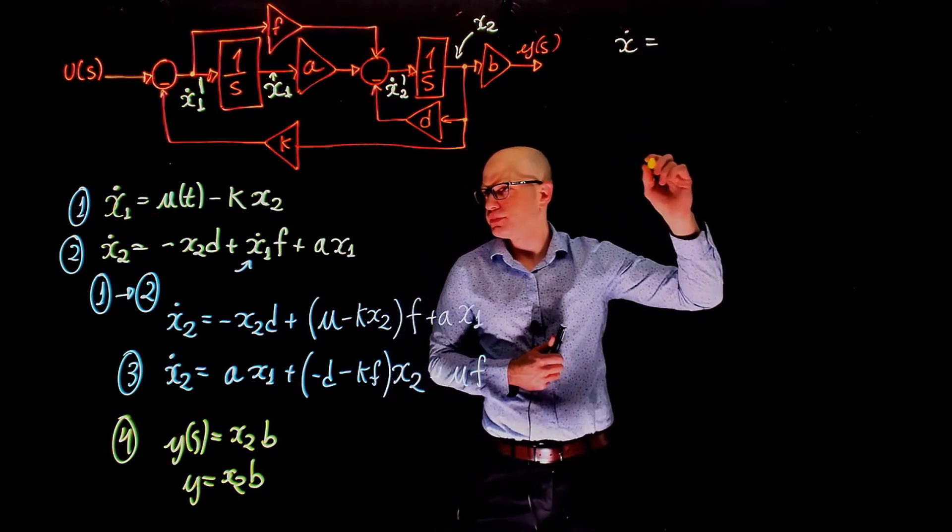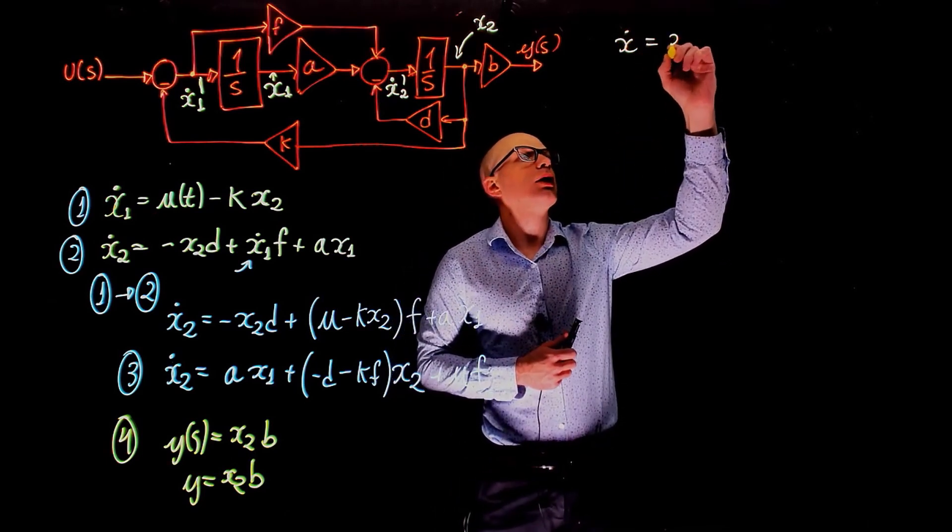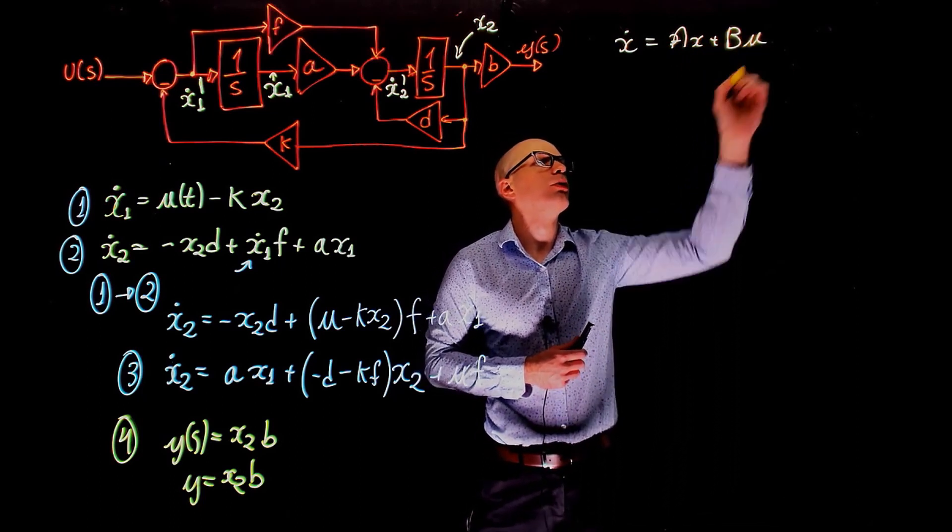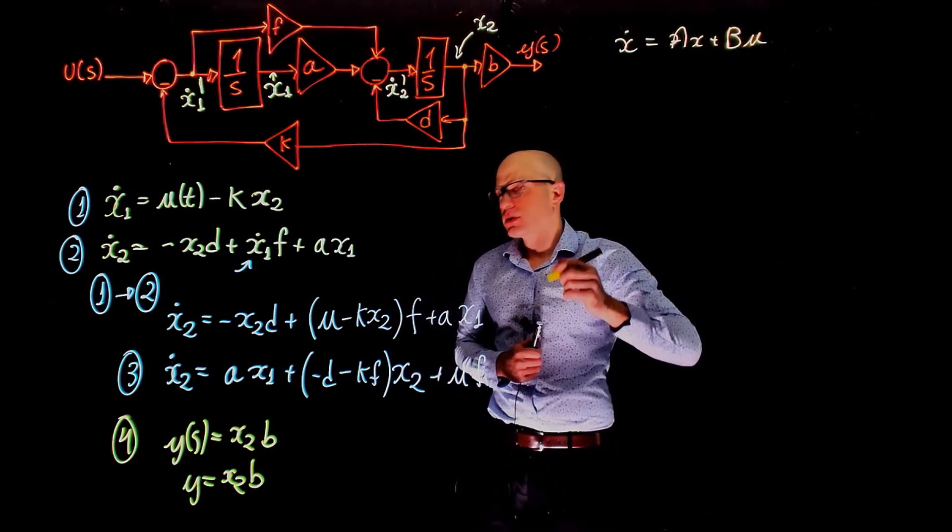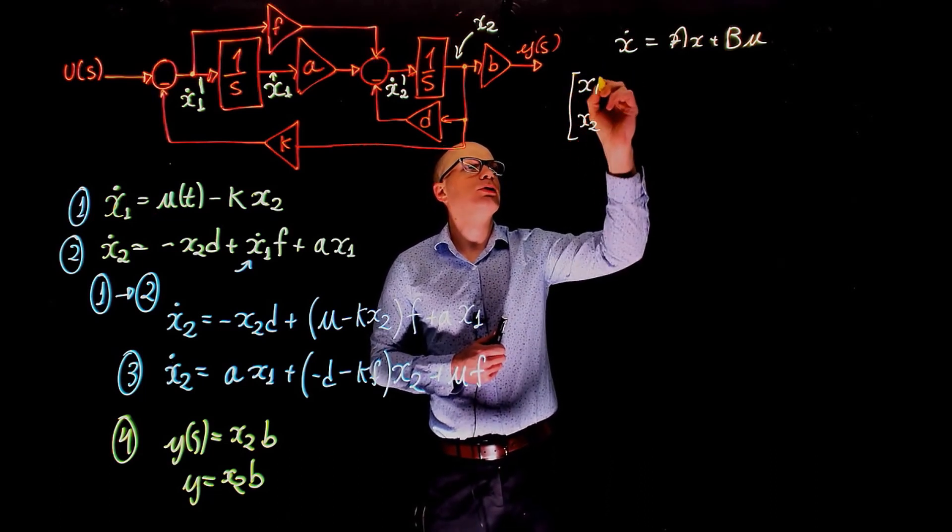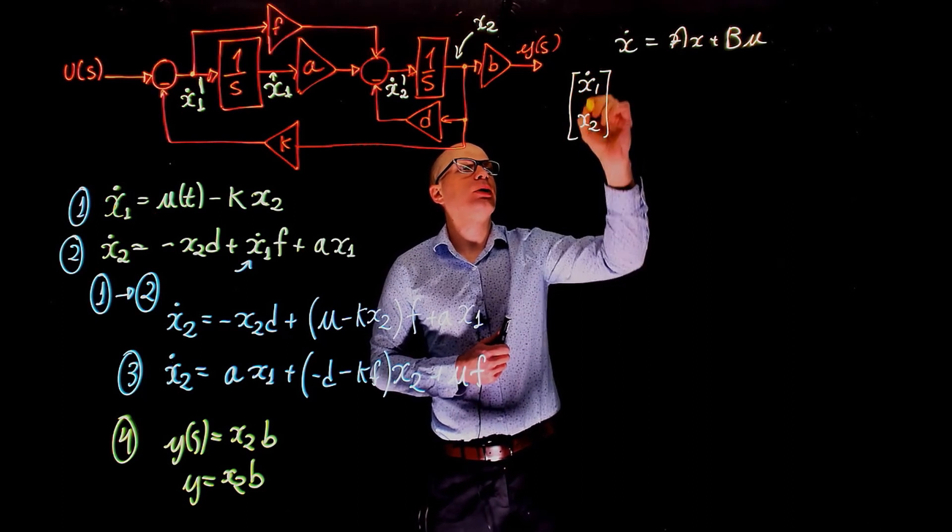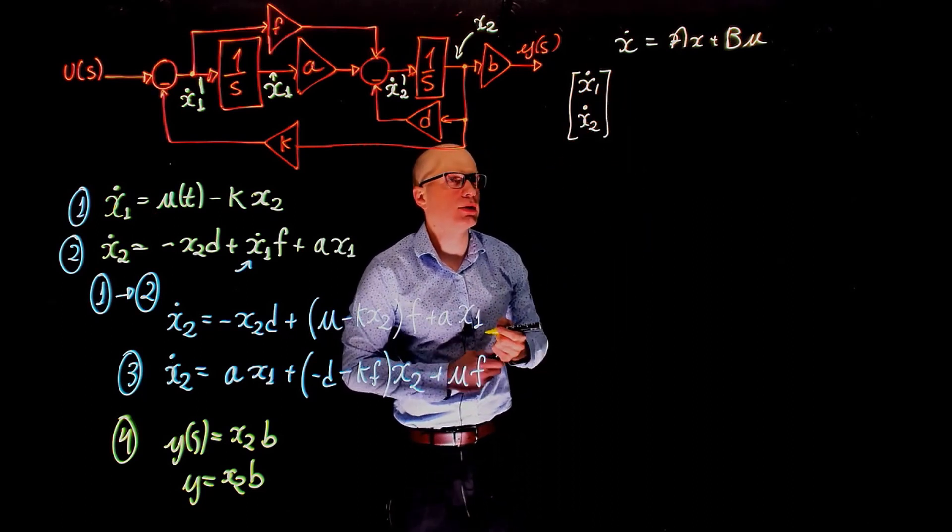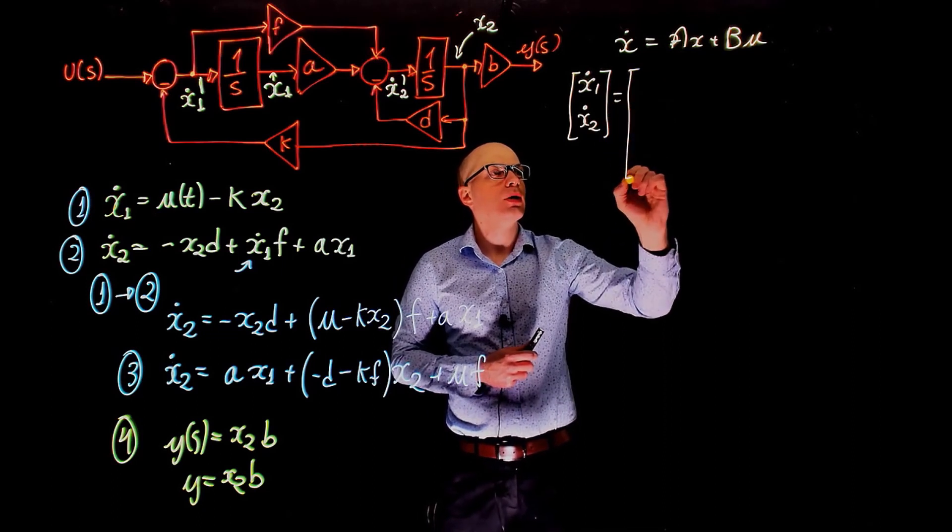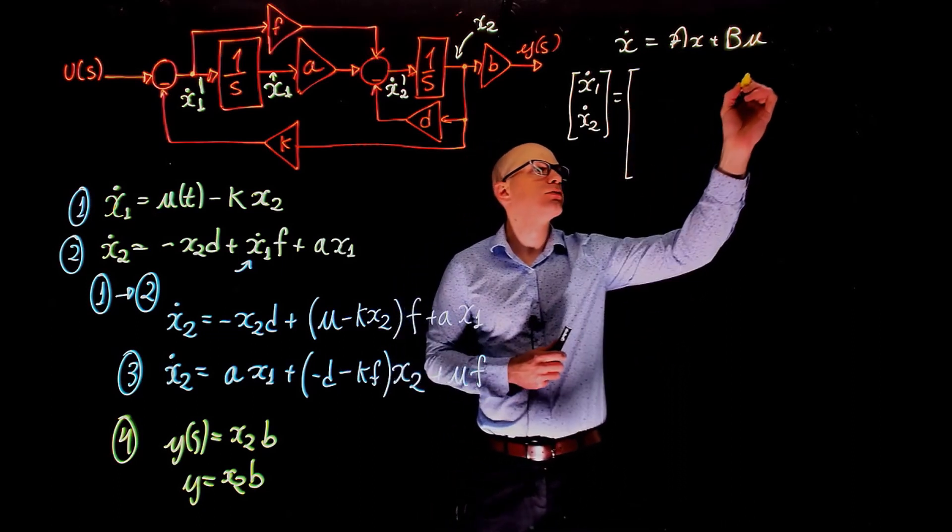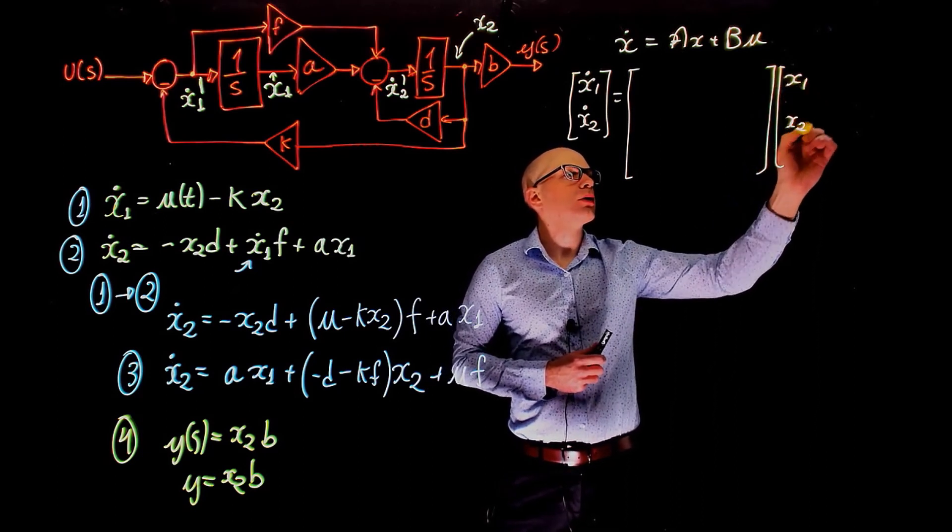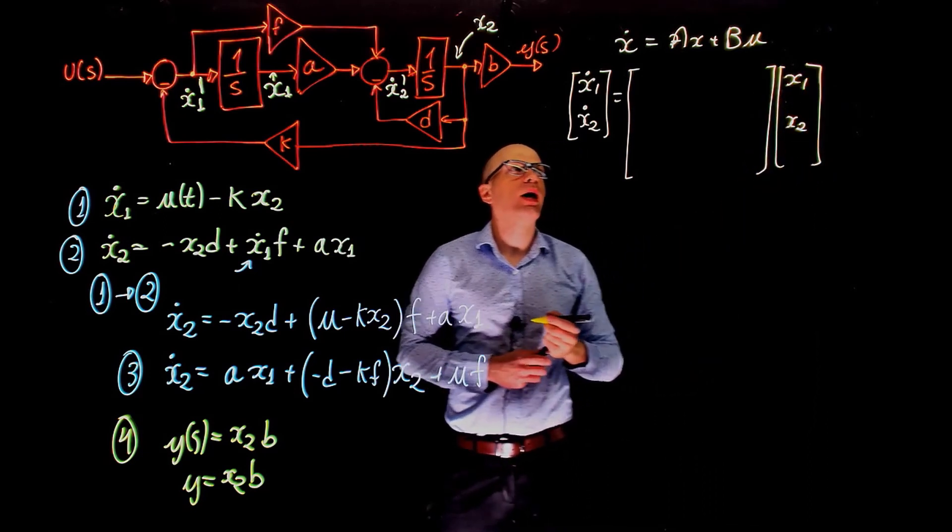x dot equals to A times x plus B times u. And our x, we're going to define it as x1, x2. The derivative is again an element-wise operation, so it's x1 dot and x2 dot. And this is equal to A times x, x being again x1, x2. What do we have there?